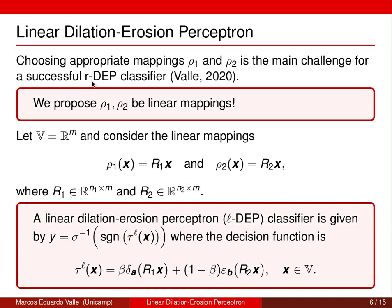In this talk we propose to consider rho_1 and rho_2 as linear mappings, giving rise to the Linear Dilation Erosion Perceptron (L-DEP). When the input space is R^m and rho_1 and rho_2 are linear, there exist matrices R1 and R2 such that rho_1(x) = R1*x and rho_2(x) = R2*x. Accordingly, the L-DEP classifier is given by y equals sigma inverse of the sign of tau_L(x), where tau_L is a convex combination of a dilation on R1*x and an erosion on R2*x.